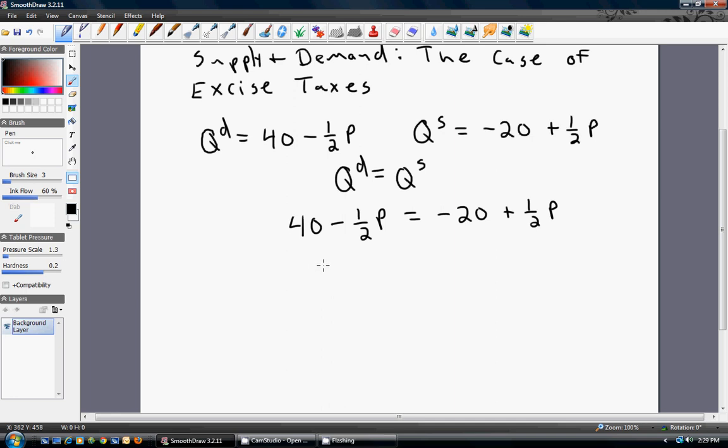And what we're going to end up with is 60 equals P. That is going to be our equilibrium price.